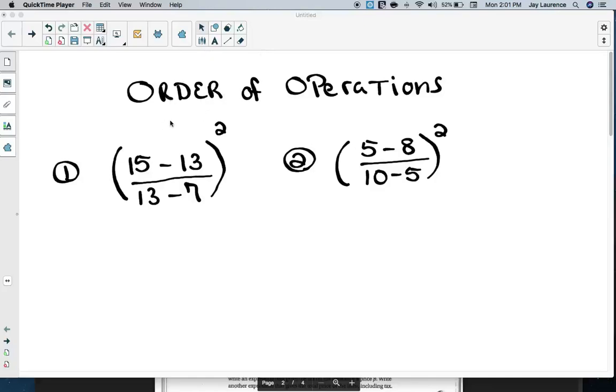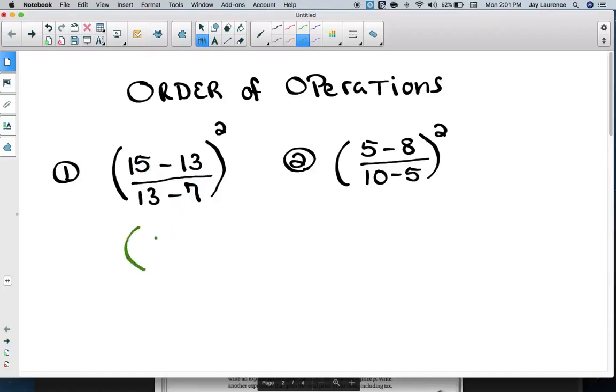Order of operations, parentheses. I must do inside the parentheses first, so I come inside the parentheses and it looks like I have to subtract in the numerator. And when I do that, I get 15 minus 13, which is 2. And then I am going to subtract in the denominator, which is going to get me a negative 6. Okay, and then there is a square outside the quantity. But again, I am going to do as much as I can in the numerator. Well, I have got negative 2 sixths. I am going to simplify that fraction. I am going to turn that into negative 1 third.